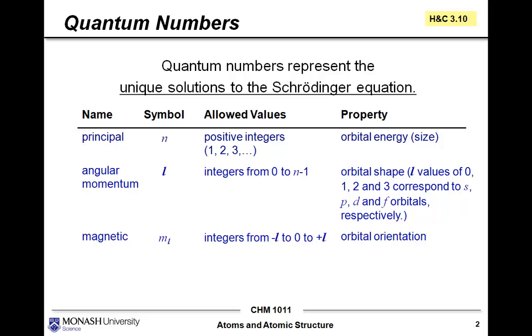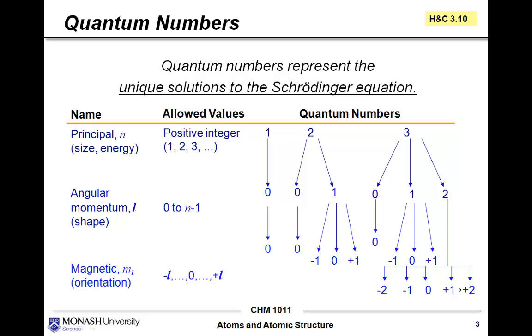The magnetic quantum number, designated by ml with a subscript l, can take on integer values anywhere from negative l through 0 through to positive l. This corresponds to the orbital orientation. You can think of these orbitals being on some sort of x, y, z axis or a, b, c axis. It doesn't matter what your three axes are called, but we need to think of these orbitals in three-dimensional space. We'll talk about that in later tutorials.